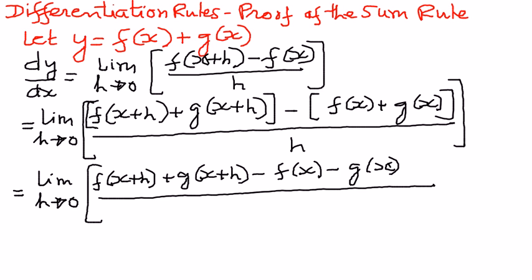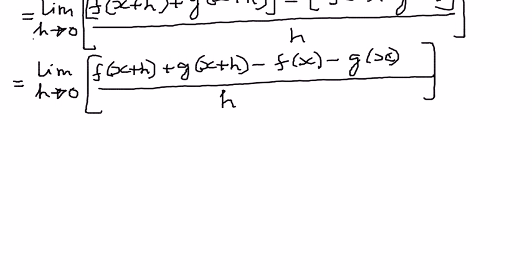We have distributed the negative sign to every one of the terms inside the second set of brackets. So therefore, that is what we are left with — the whole thing divided by h. Now, if we select a few terms in here, we can write this one as follows.